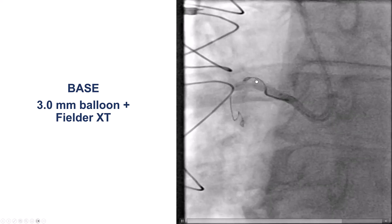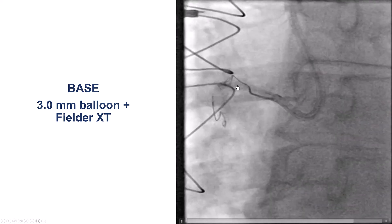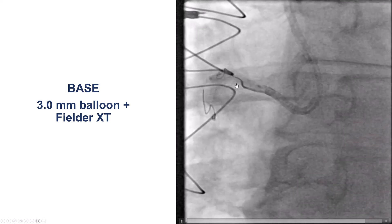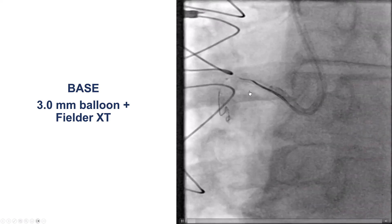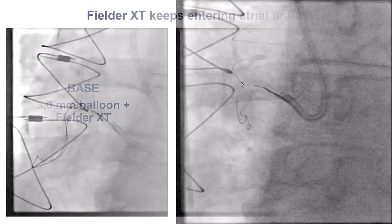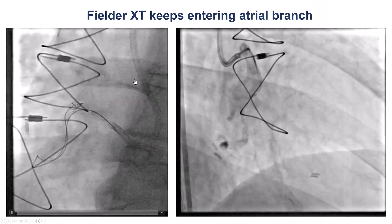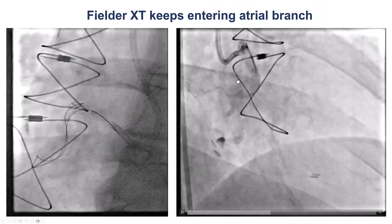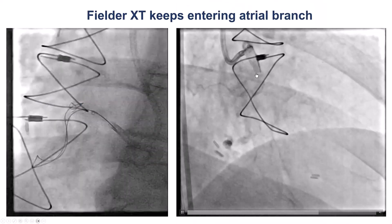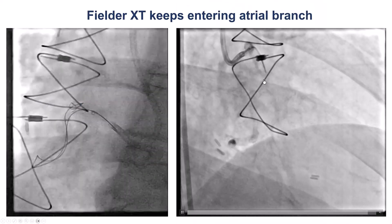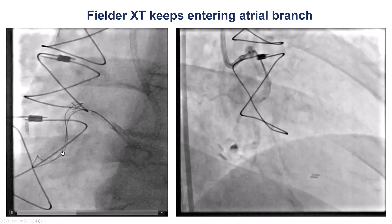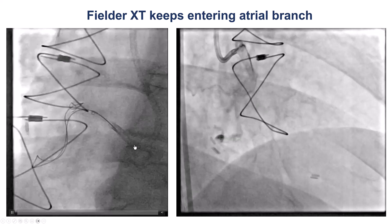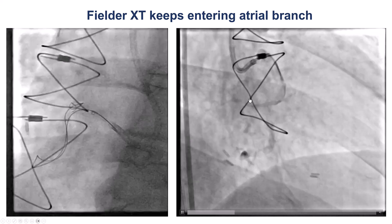Because we were into the intraplaque space and with the heavy calcium, it was very hard to advance equipment. The Fielder XT did progress; however, unfortunately, it kept entering into an atrial branch.